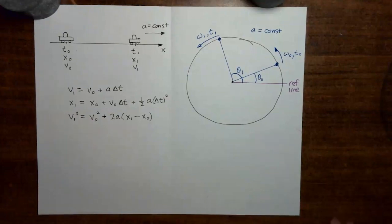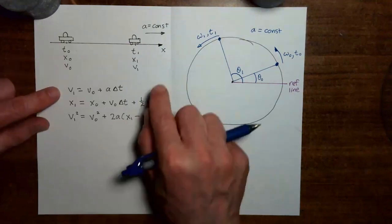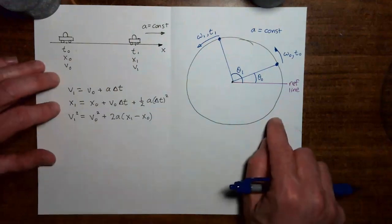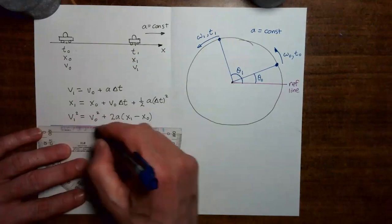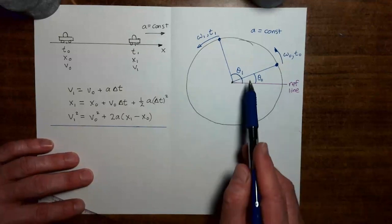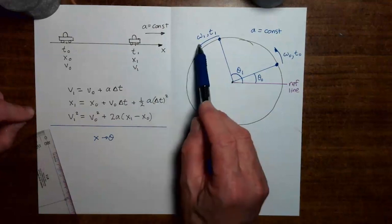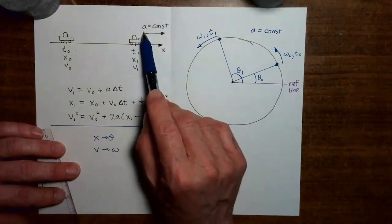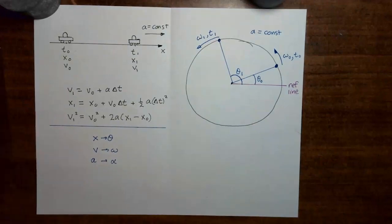How could we come up with such a set of equations? It turns out that all we have to do is take the linear equations and repurpose them to describe an object moving in a circle with constant angular acceleration. Over here the basic position variable is x; over here it is θ. So we take x and turn it into θ. Regular velocity v becomes angular velocity ω, and linear acceleration a becomes angular acceleration α.